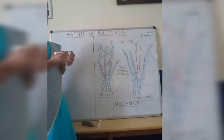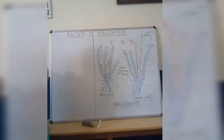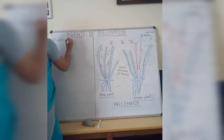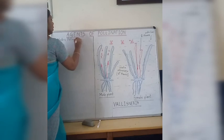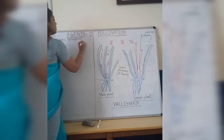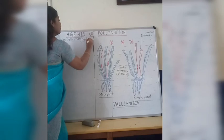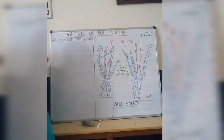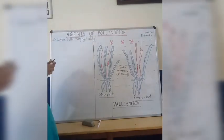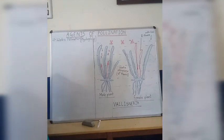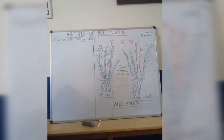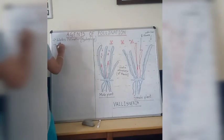The next type of pollination we are going to study is water pollination, the second abiotic pollinating agent. Water pollination is also known as hydrophily, meaning pollination takes place with the help of water. But this water pollination is very rare in flowering plants.